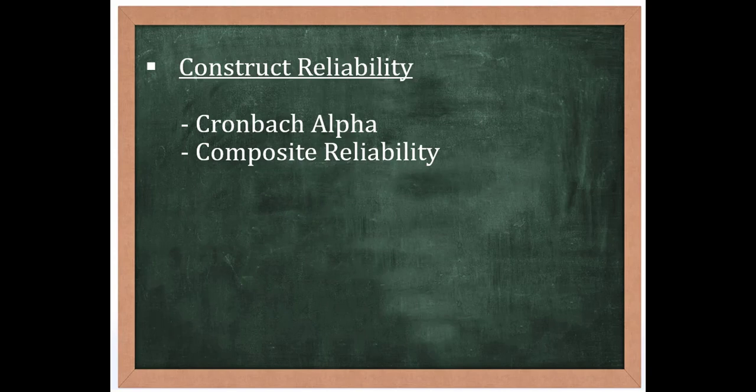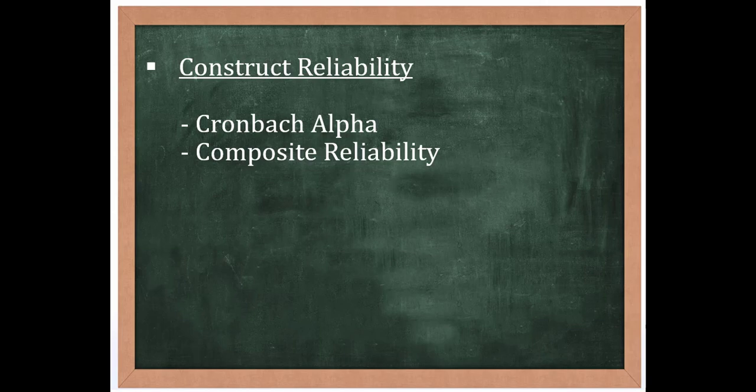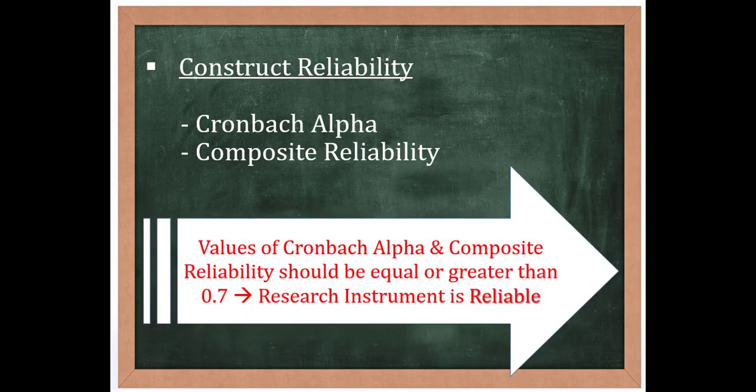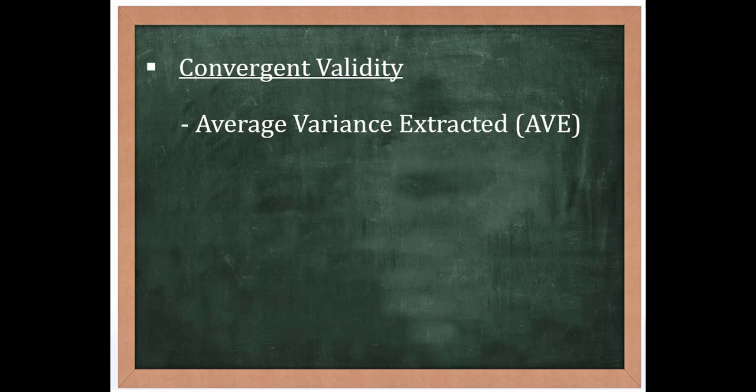Cronbach alpha and composite reliability are two different measures of construct reliability. Let's see the benchmark. Both the measures' values should be equal or greater than 0.7 to measure convergent validity.